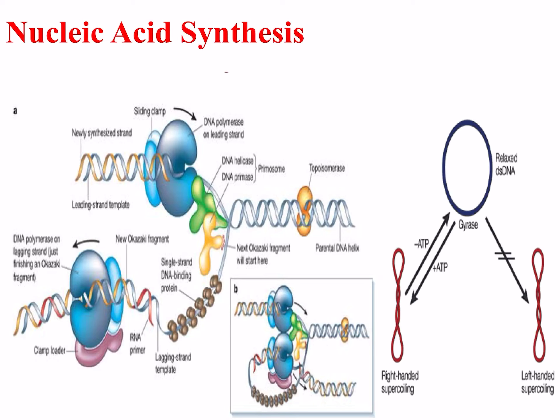Nucleic acid synthesis and its many enzymes, shown in the diagram on the left, are a potential target for antibiotic intervention. Besides DNA polymerase, other enzymes such as the topoisomerases are also targets. DNA gyrase, a member of the topoisomerase family, is responsible for controlling supercoiling, which if not kept under control can damage DNA by inducing breaks and cause cell death. Inhibiting this enzyme with quinolone antibiotics can be effective.